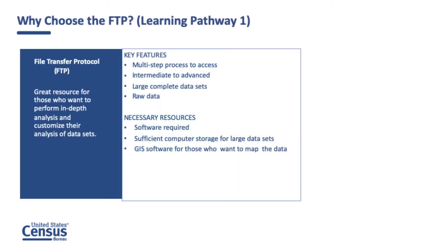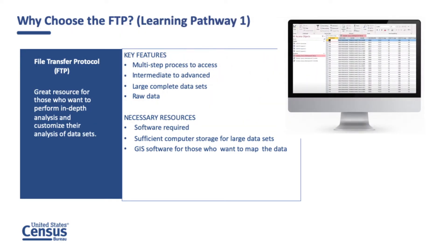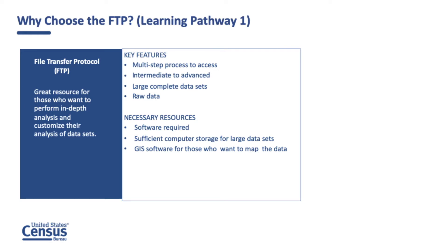The FTP is a great resource for those who want to perform in-depth analysis and customize their analysis of data sets. When you select a state, you will be downloading all the files for every level of geography available within that state. The FTP is the only method to download the complete set of redistricting data files for each state. Downloading from the FTP is a multi-step process and requires the use of statistical analysis software to extract the data. Pathway 1 will provide detailed instruction guiding you through how to download from the FTP step-by-step.